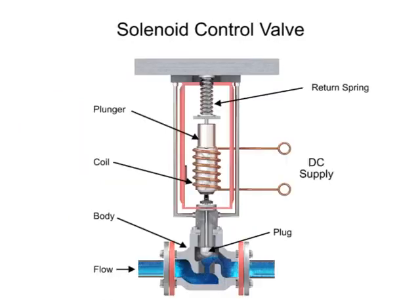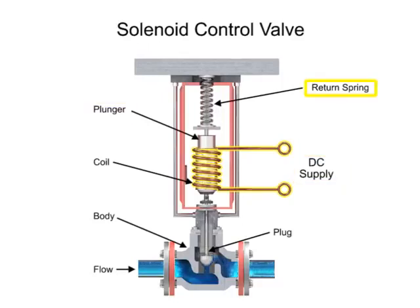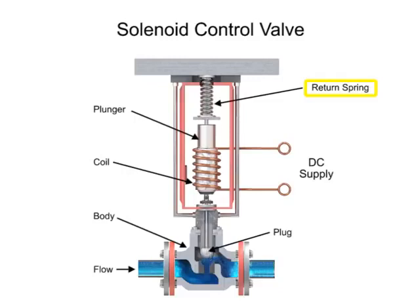For on-off control of the valve, a solenoid is used to actuate the valve to a fully closed or fully open position. Applying current to the coil generates a magnetic field that moves the plunger downward against the return spring. With zero current applied to the coil, the spring pulls the plunger upwards to the fully open position for a normally open state control valve.